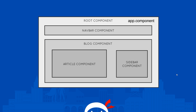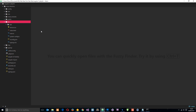Another way of looking at it: imagine this is your website and the whole website is the root component, which is the app.component file created for us when we make a new project. Within that we have the navbar component, the blog page component, and within the blog page component we have the article component and the sidebar component. All of these things can be controlled individually by each of their three component files.